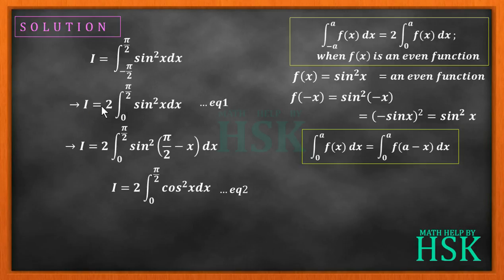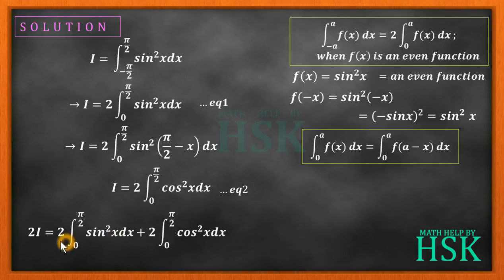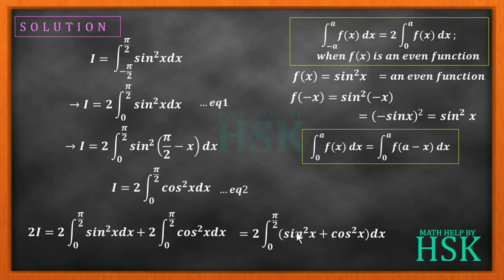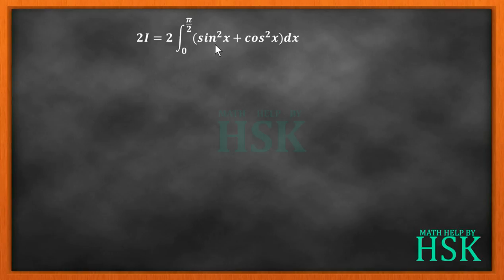Now we add equation number one and equation number two. So 2I equals twice the integral of sin²x dx from 0 to pi/2 plus twice the integral of cos²x dx from 0 to pi/2. This can be written as twice the integral from 0 to pi/2 of (sin²x + cos²x) dx. Since sin²x + cos²x = 1, the two and two cancel out, giving I equal to the integral of 1 dx from 0 to pi/2.